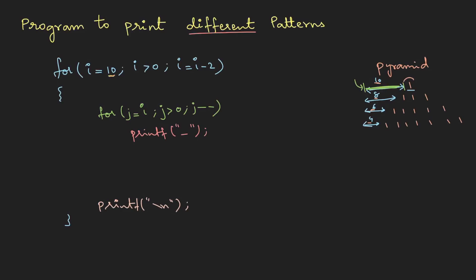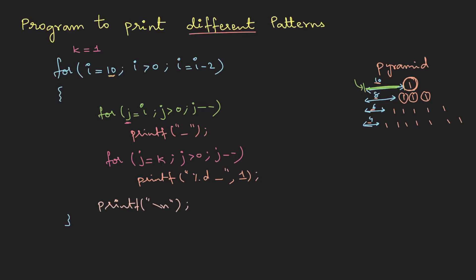Other than the spaces, we also need to print the numbers. I'll use another for loop, reusing j, with a variable k starting at 1. While j is greater than 0, j--, we printf the number with a space. Since the second row needs three 1s not one, I make k increment by 2 each iteration — so k becomes 1, 3, 5 and so on. The outer loop is row logic, the first inner loop is space logic, and the second inner loop is the print logic.